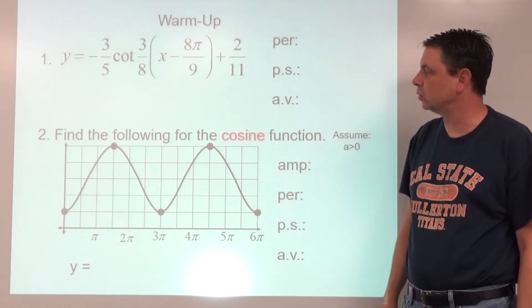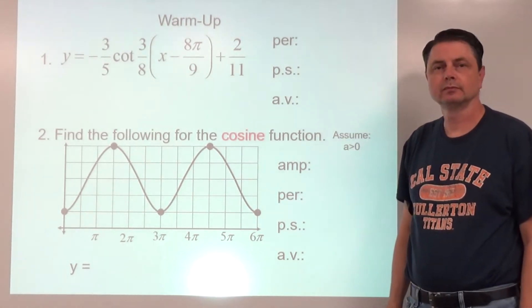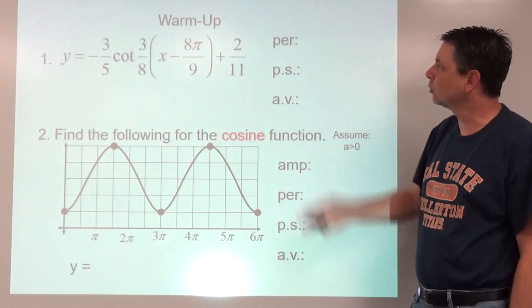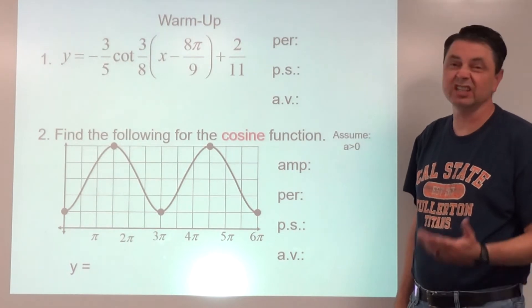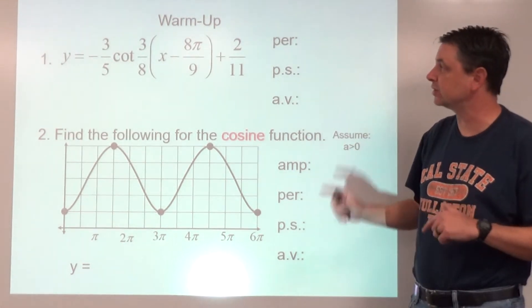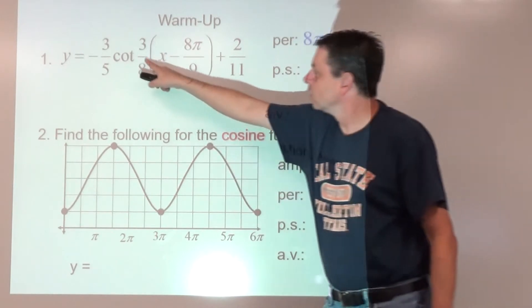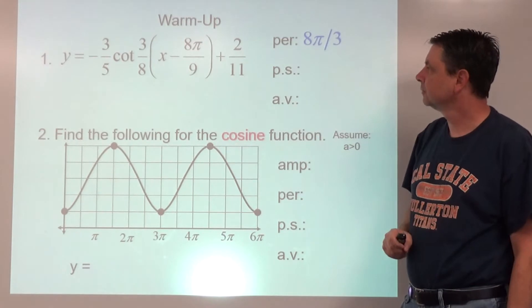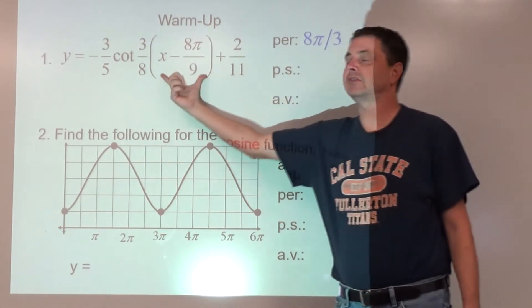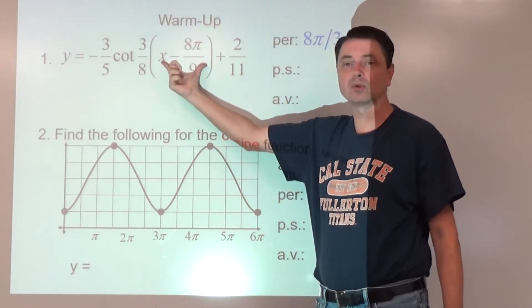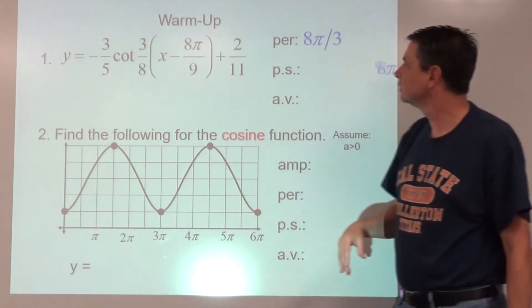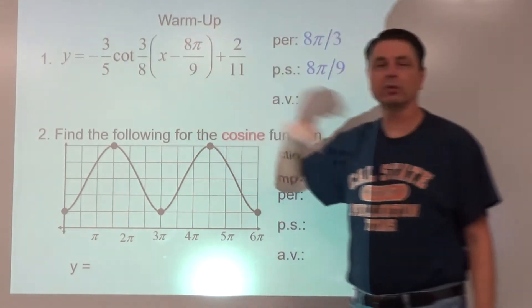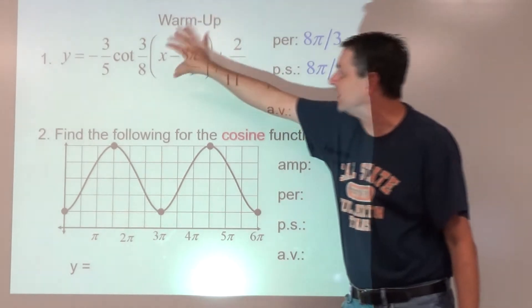Number one: period is pi for cotangent, pi divided by B, or pi times the reciprocal, so pi times 8/3. Phase shift, the advantage of being factored, we're looking right at the phase shift right here, so it's just 8π/9.